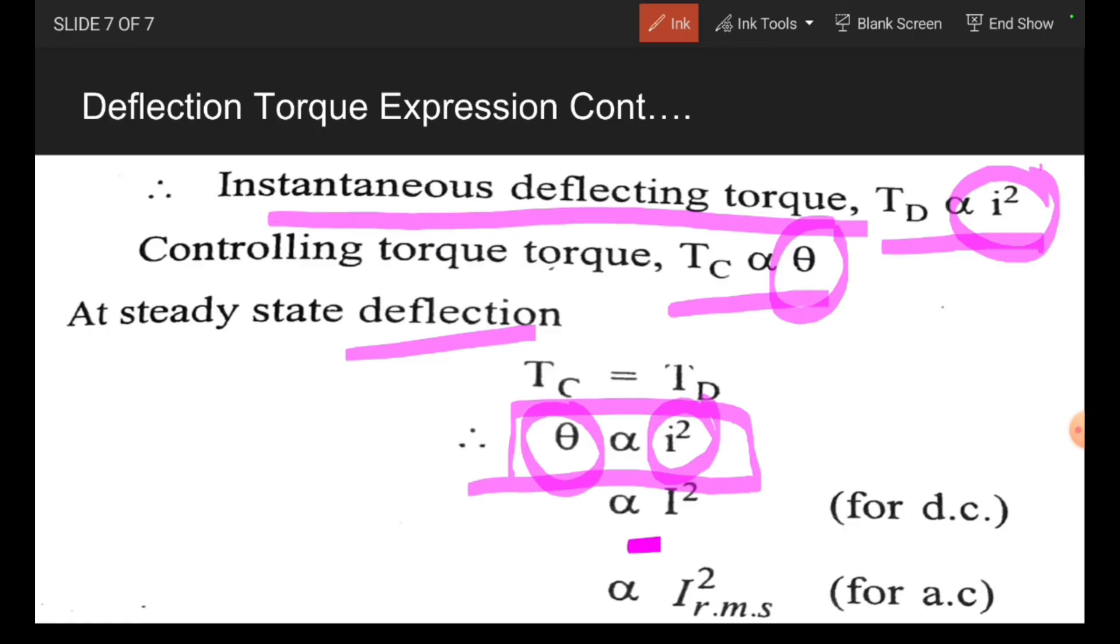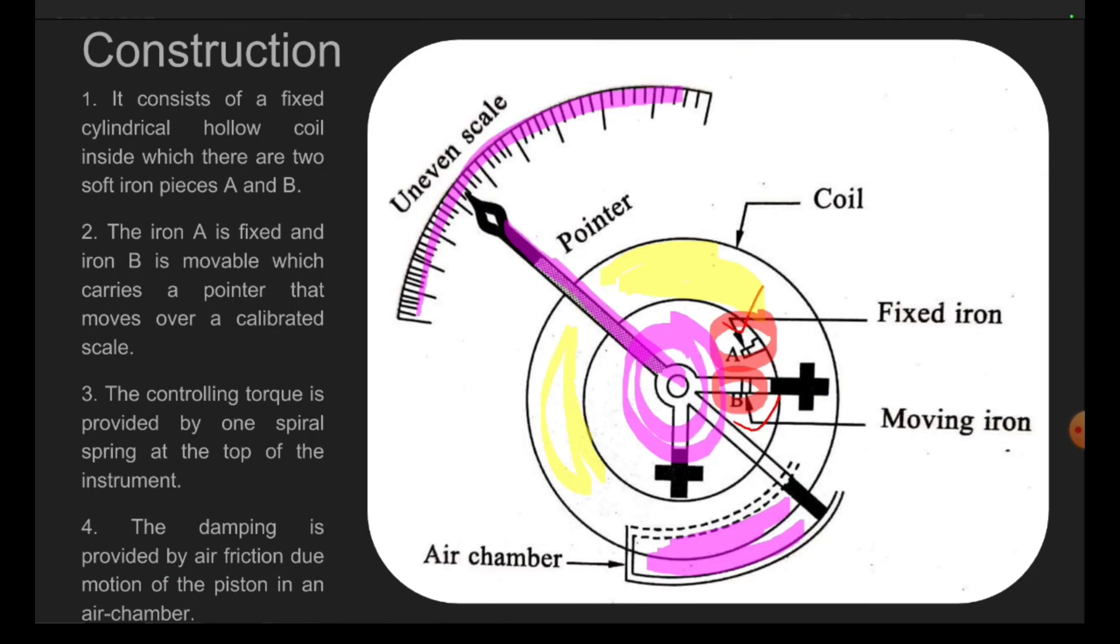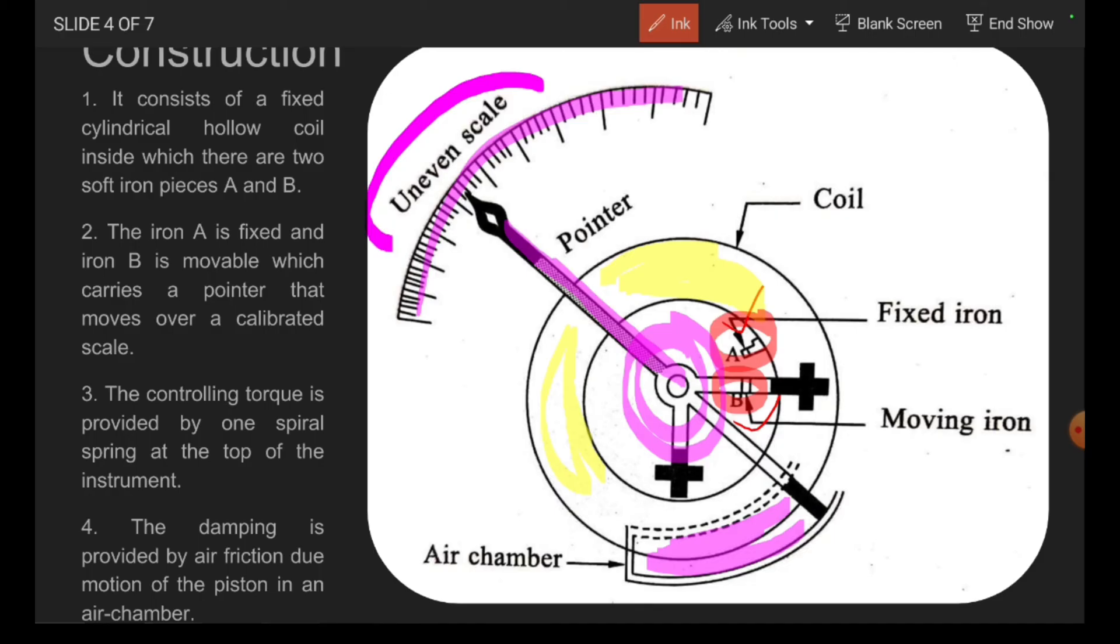It means that, this theta is proportional to I squared for the DC and it is proportional to I squared RMS value for the AC. We are getting the square component, that's why we are indicating here, the scale is uneven scale we have to be chosen. Thank you.